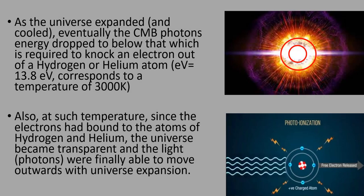As the universe expanded and cooled, eventually the CMB photon's energy dropped to below that which is required to knock an electron out of a hydrogen or helium atom, which is an energy of 13.8 electron volts, which corresponds to a temperature of the radiation, the CMB radiation, of 3,000 degrees Kelvin. At such temperature, since the electrons had bound to the atoms of hydrogen and helium, the universe became transparent and the light photons were finally able to move outwards with the universe expansion.